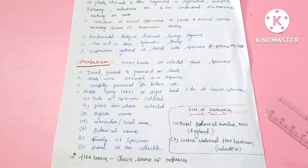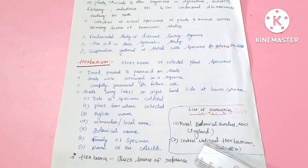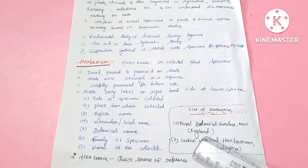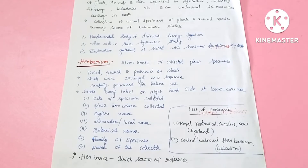Herbaria provide a quick source of reference. Examples of important herbaria include the Royal Botanical Kew Garden located in England, and the Central National Herbarium located in Calcutta.